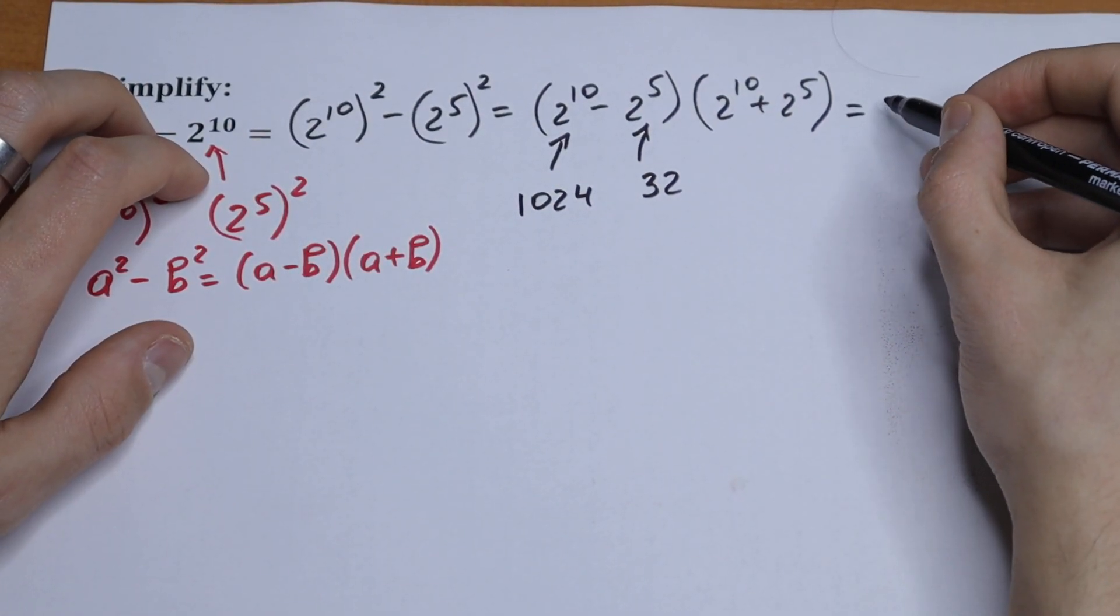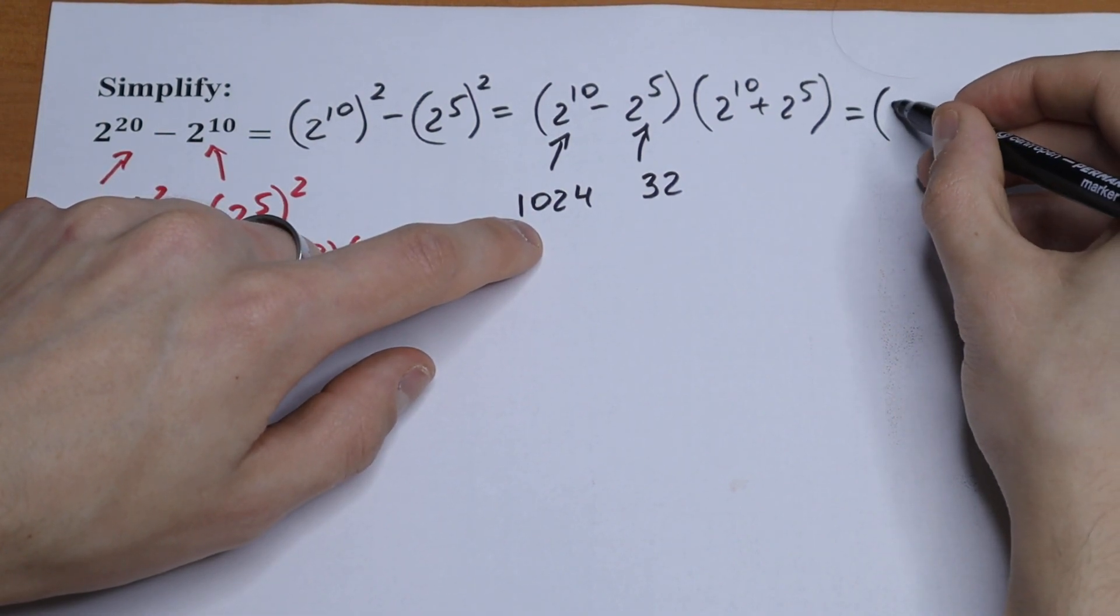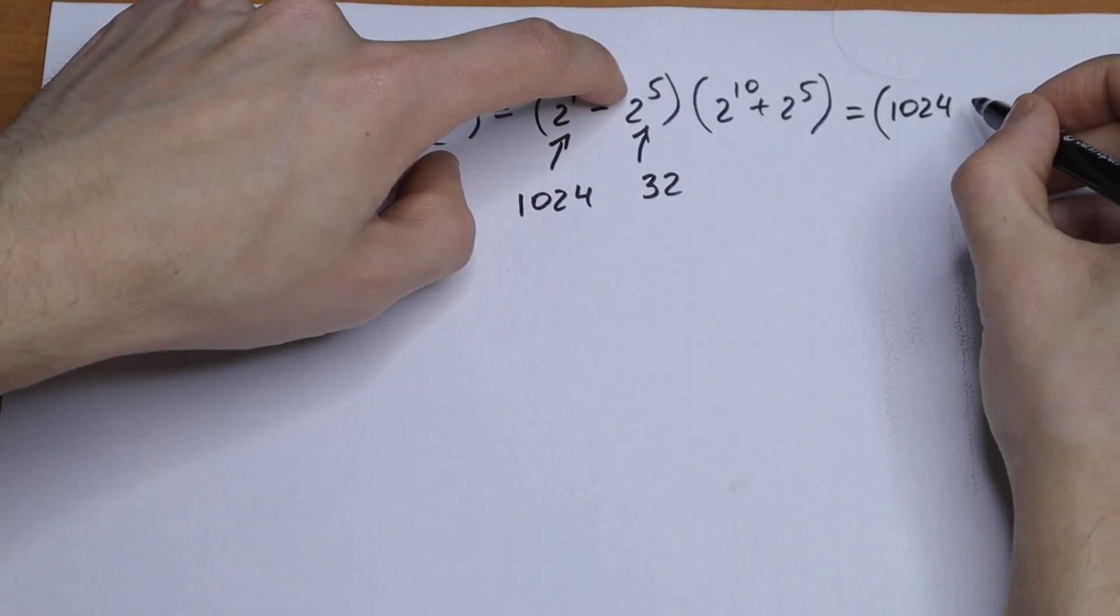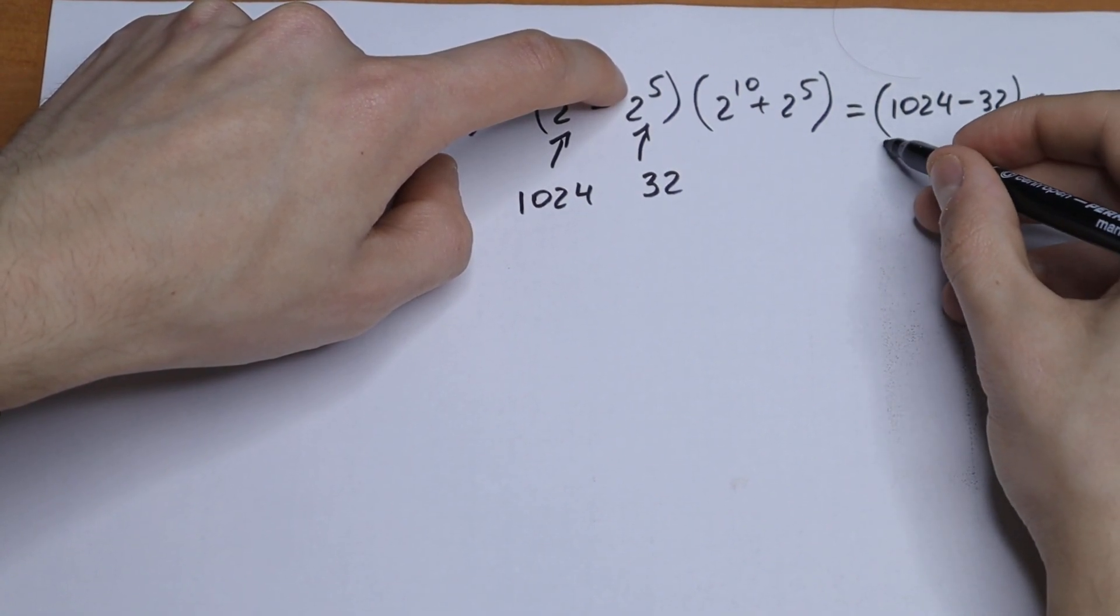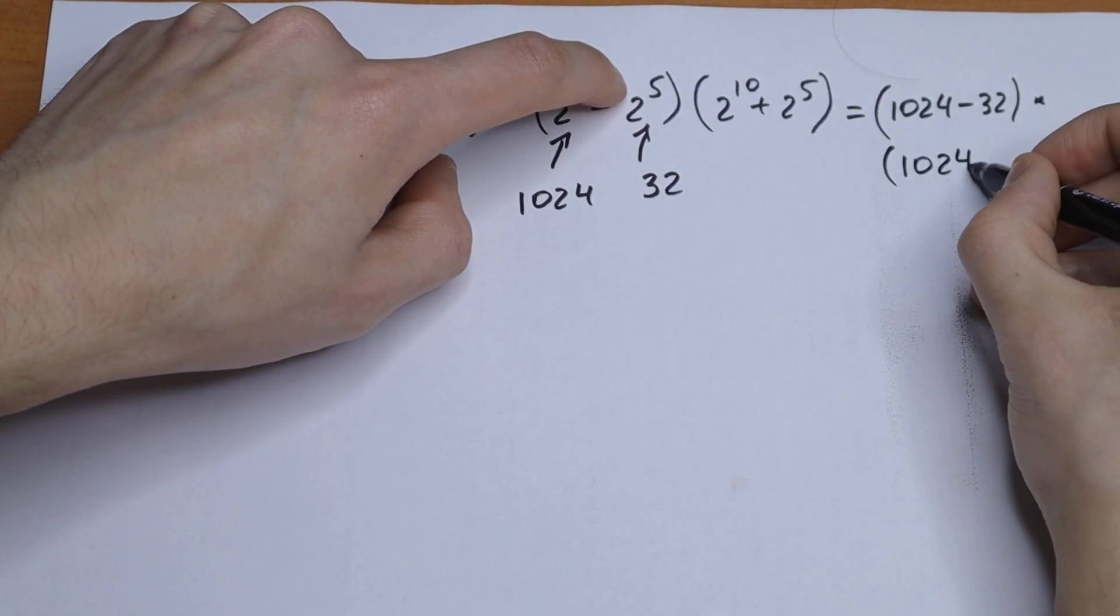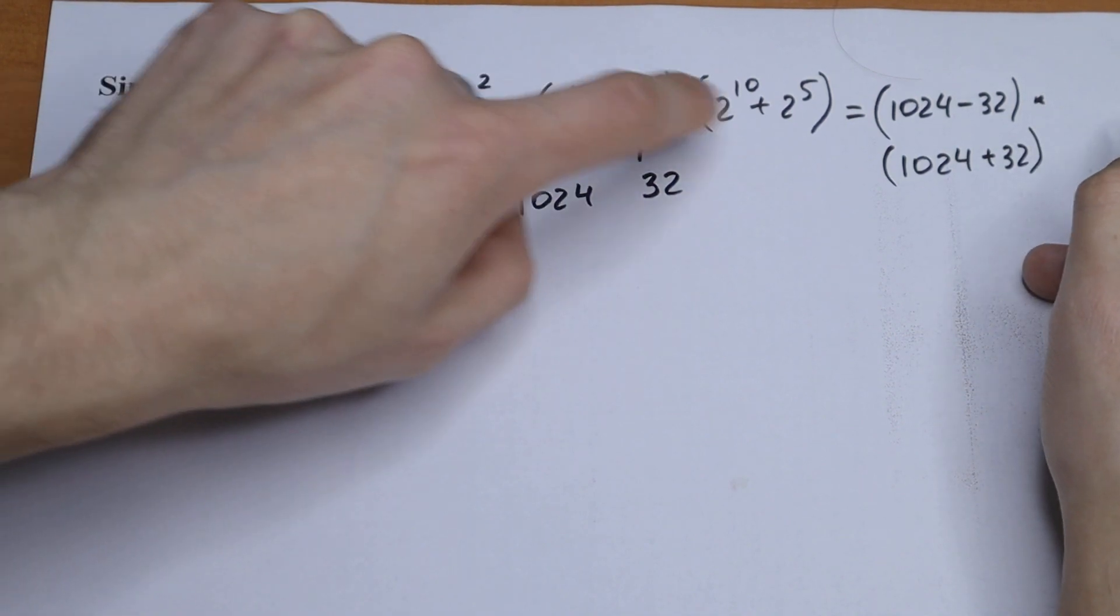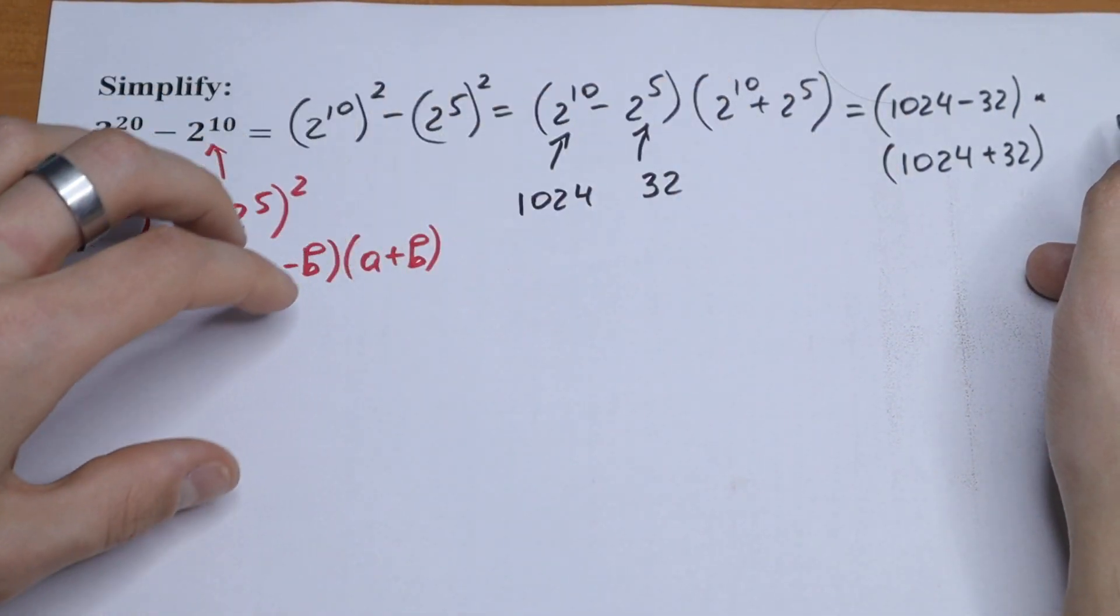As a result, we will have a product: (1024 minus 32) times (1024 plus 32). Of course we can find this value.